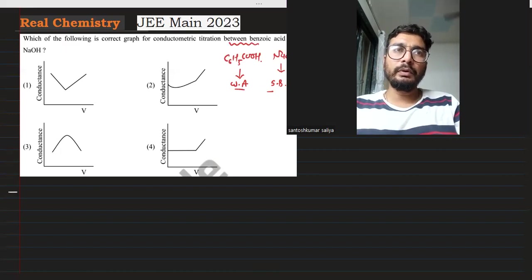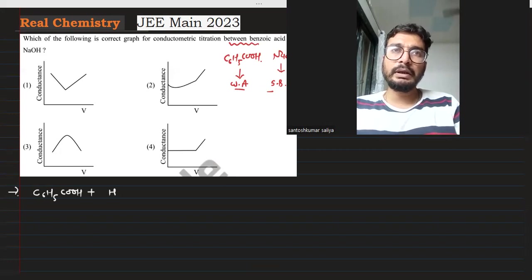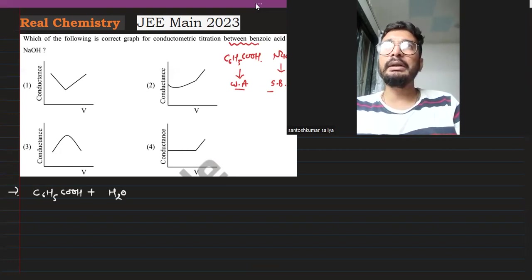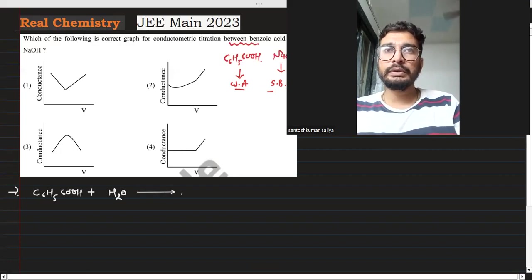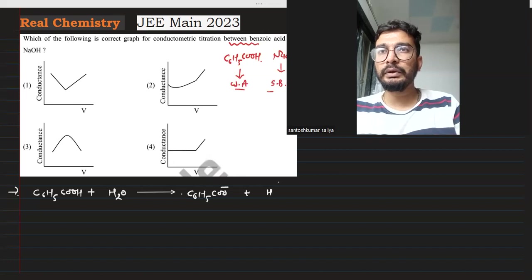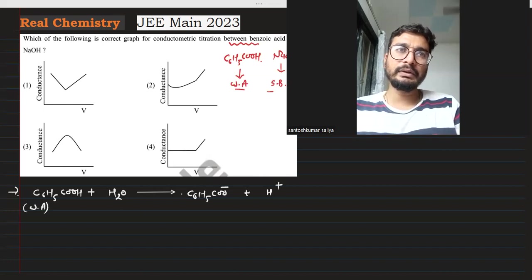When we consider benzoic acid, C6H5COOH, we add it to water. It dissociates to C6H5COO- and H+. But because it is a weak acid, it doesn't dissociate 100%. There is only a little bit of dissociation.